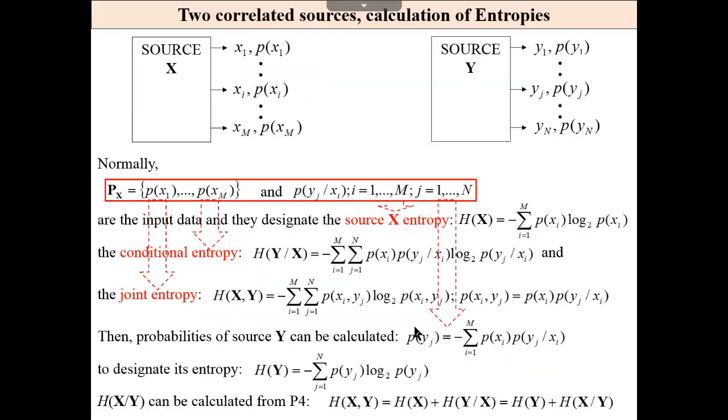Okay, the calculations. Normally we start from probability assignment of source x and conditional probabilities between x and y. Then we may calculate conditional entropy, straight forward from these two. We may calculate conditional entropy, and then we can calculate easily probabilities at the output from these two sets of probabilities and other entropies, joint entropy and entropy of source y, for example.